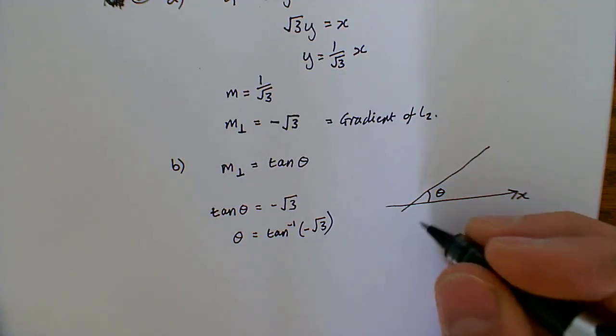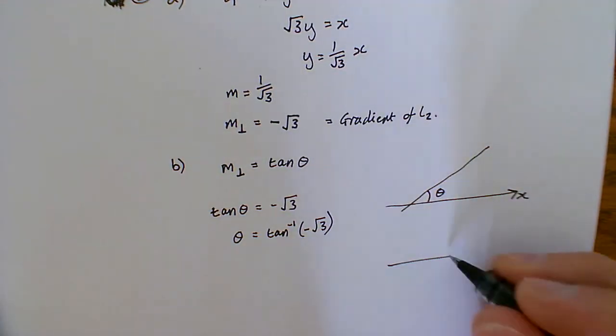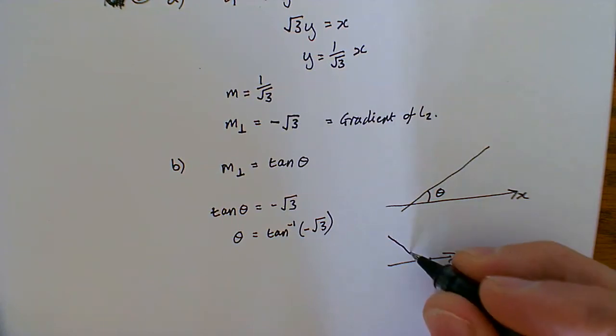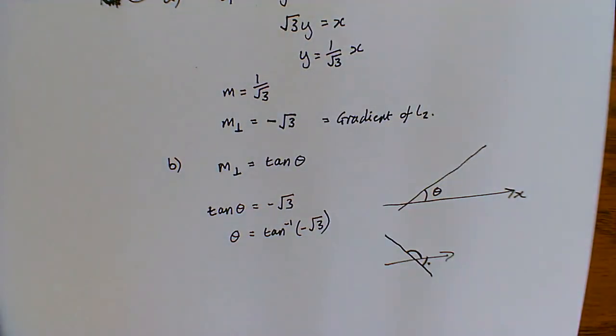Now this is going to be a slightly odd answer, because actually my diagram wasn't terribly accurate. What's really going on is this thing is a negative gradient, and the angle that the calculator is going to turn out is this one in here, because we're going to get negative angle, and then we've got to find this one up here. So just to prepare you for what's coming up. So we need to pop that in the calculator.